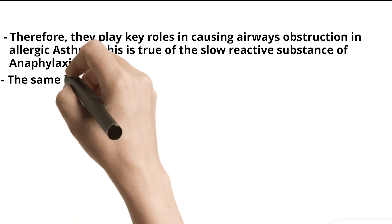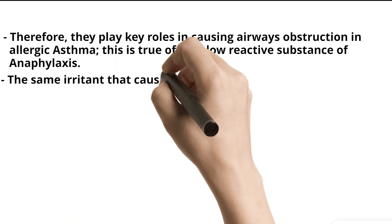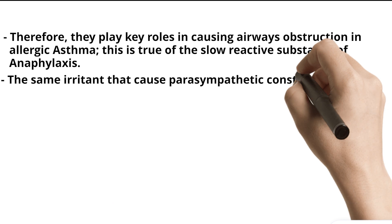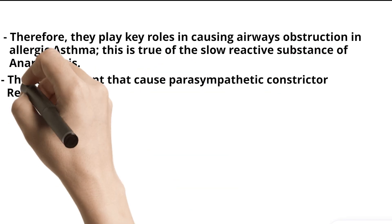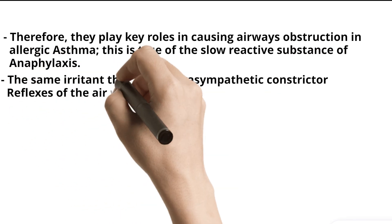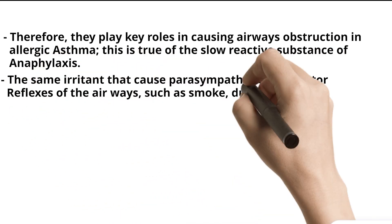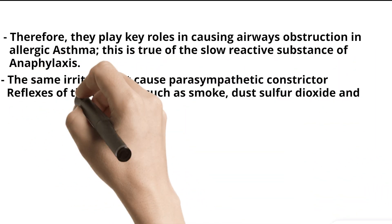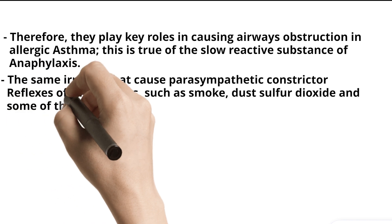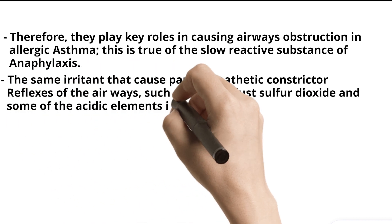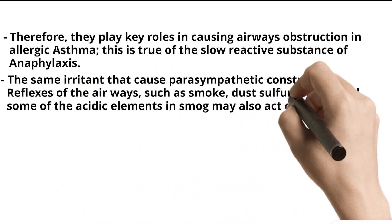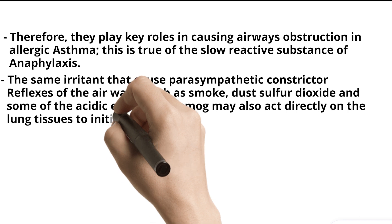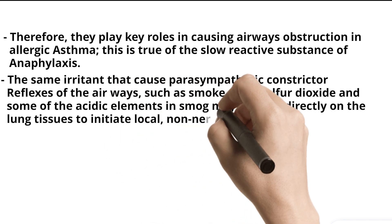The same irritants that cause parasympathetic constrictor reflexes of the airways — such as smoke, dust, sulfur dioxide, and some of the acidic elements in smog — may also act directly on the lung tissues to initiate local, non-nervous reactions that cause obstructive constriction of the airways.